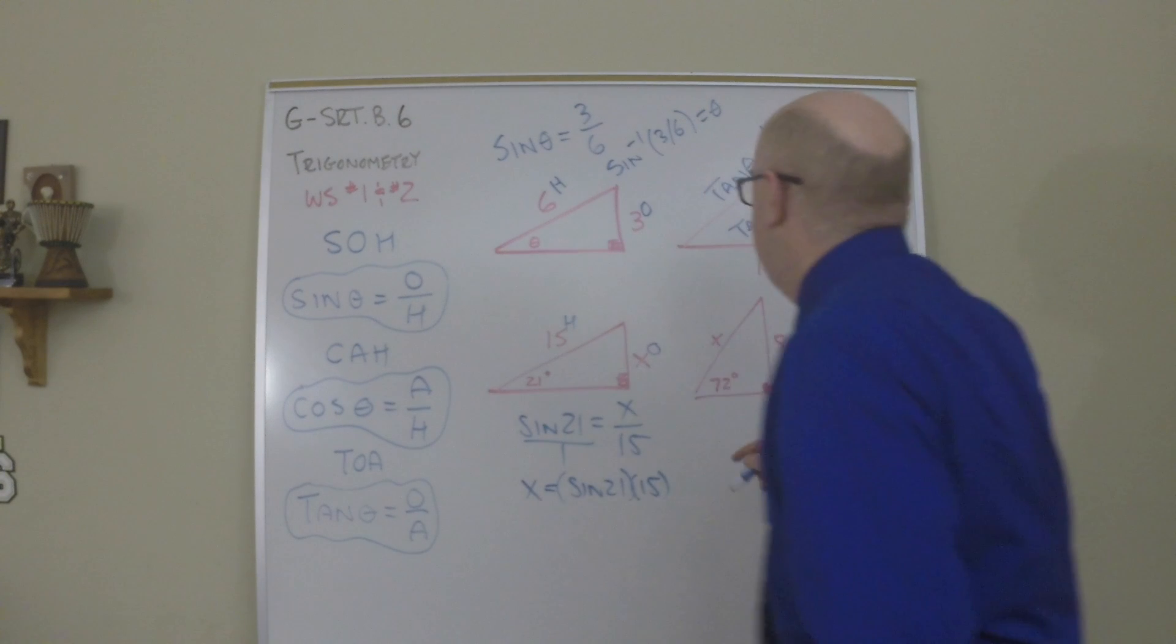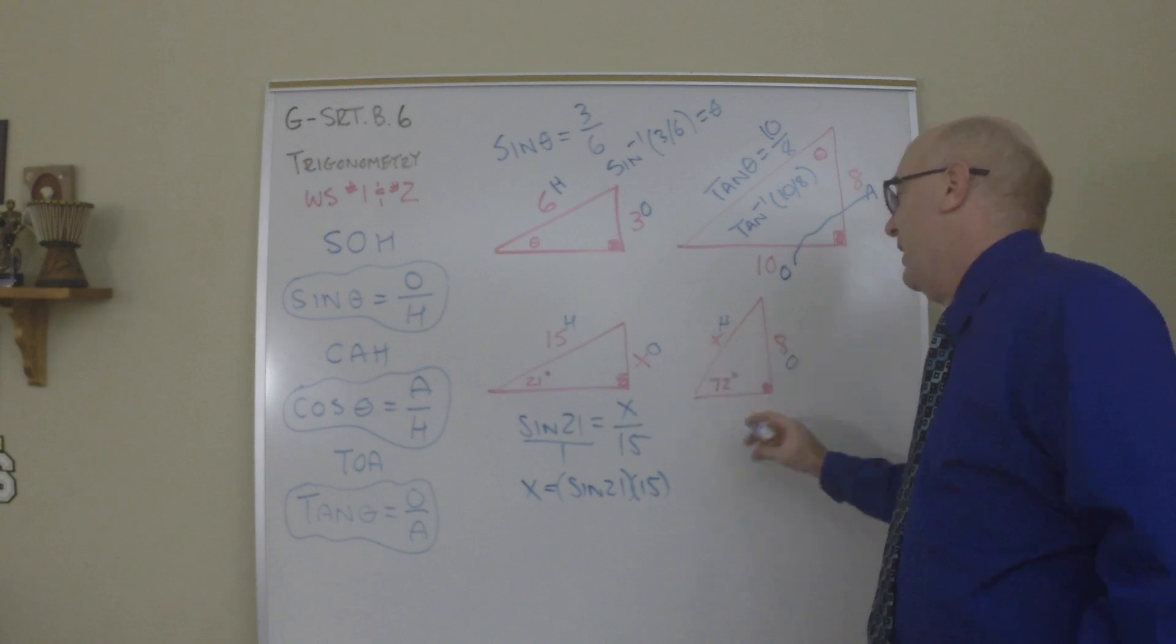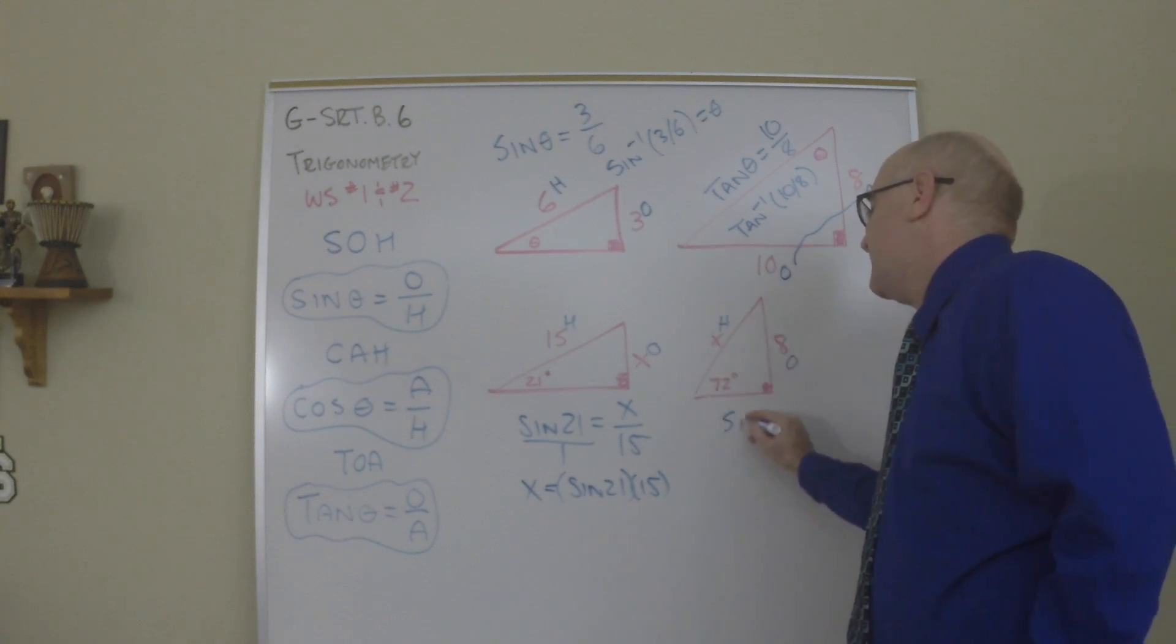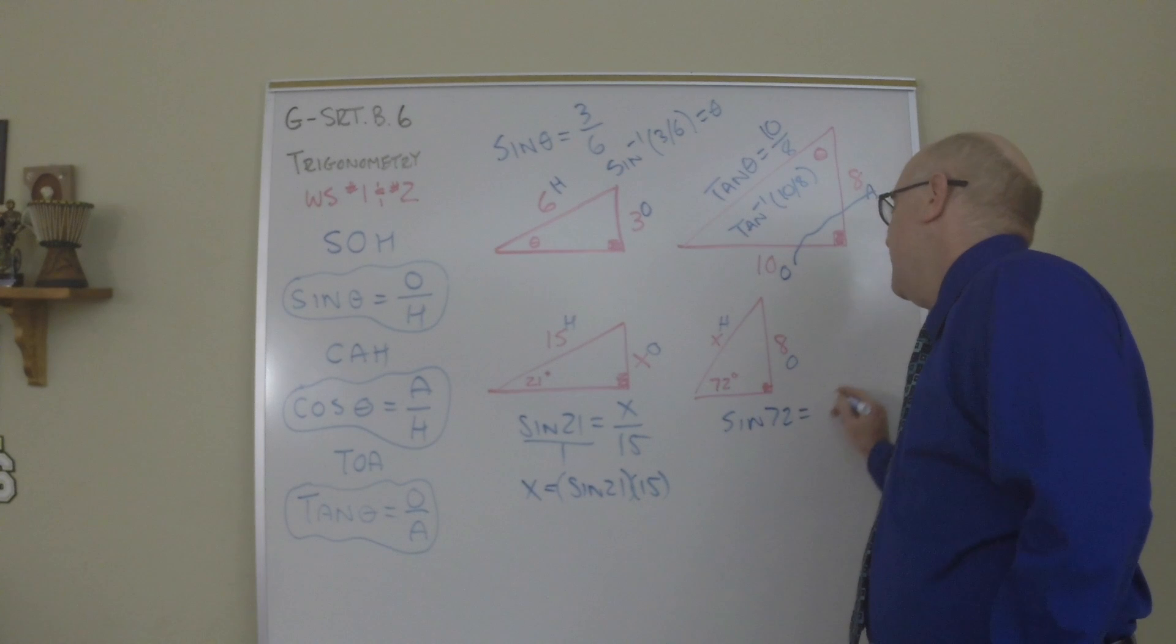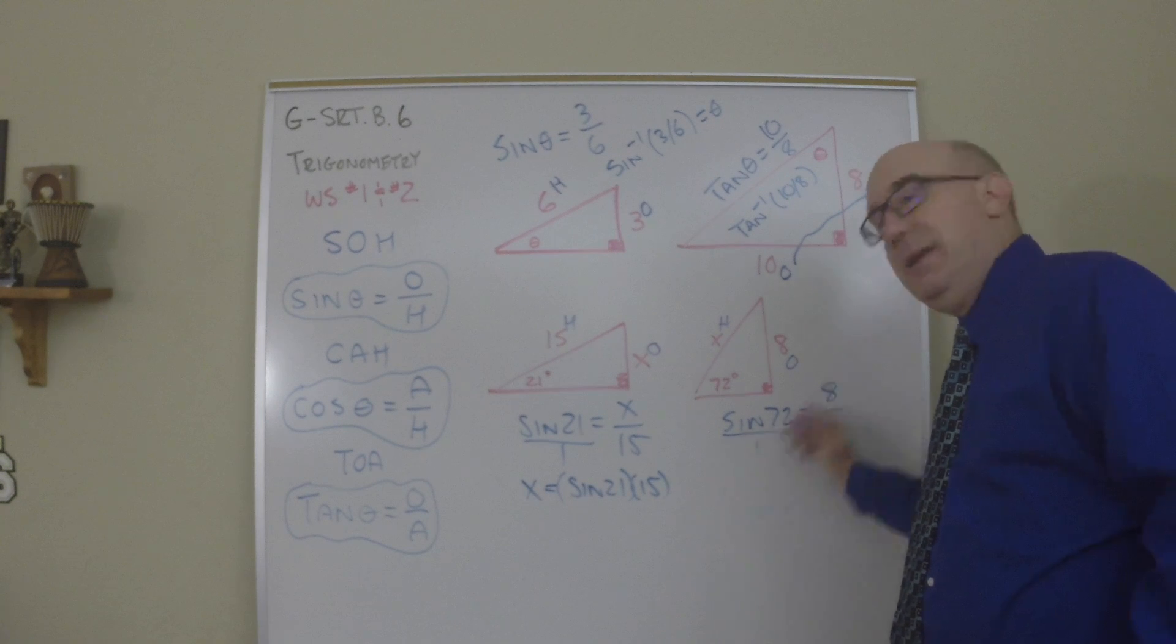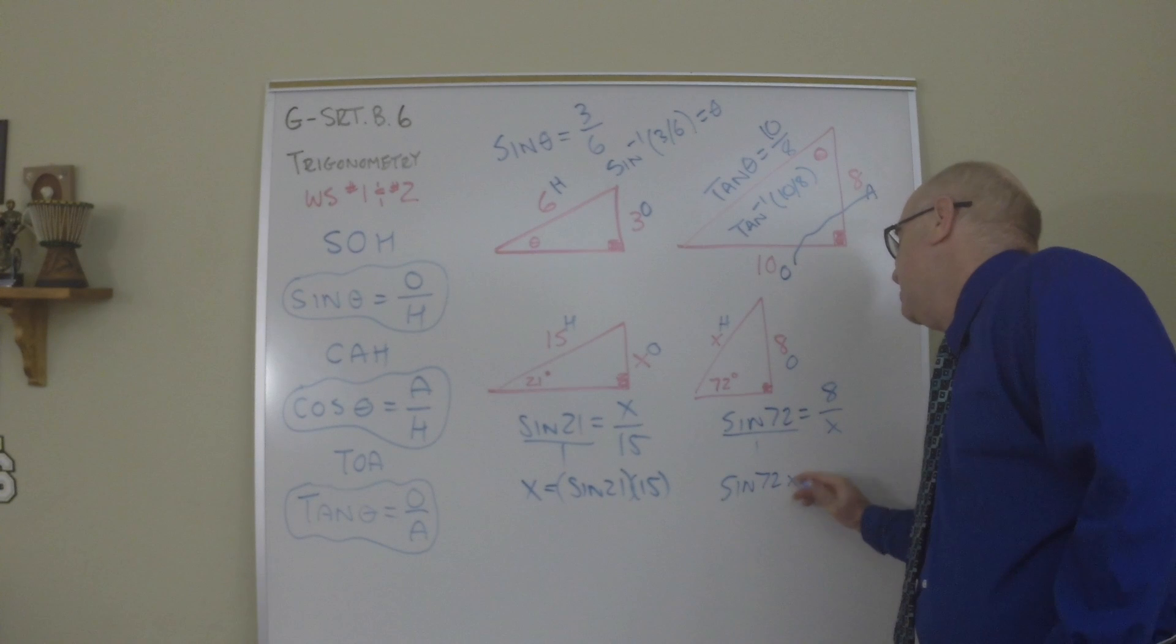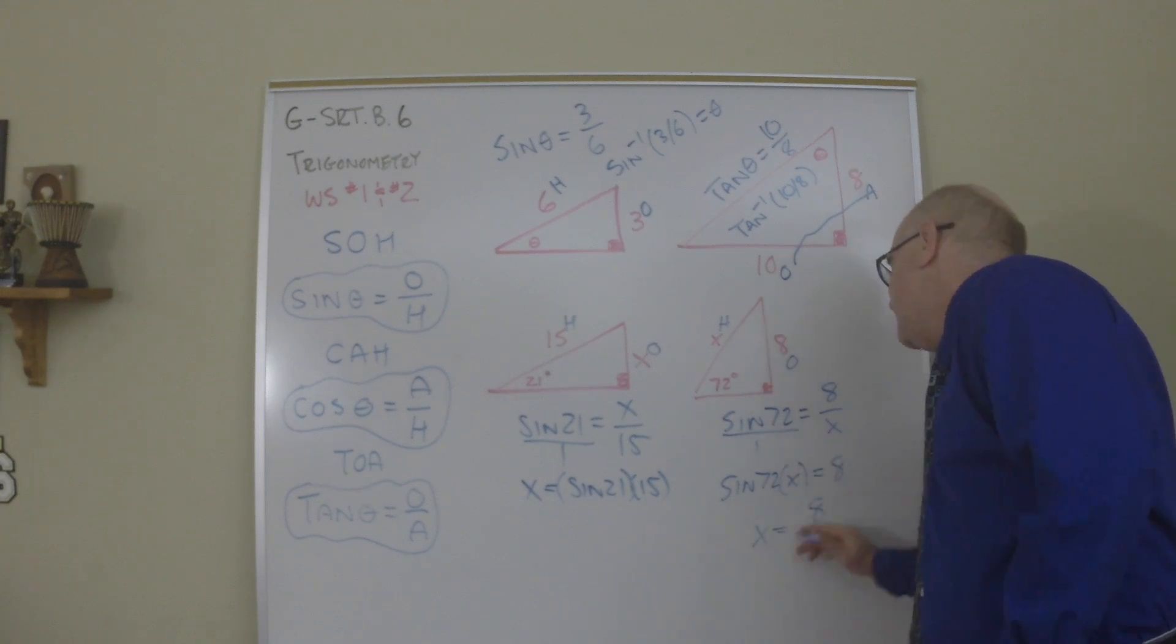Same thing over here. This is, here we go I kept doing sine unfortunately, this is opposite and hypotenuse. So again that's the sine of 72 is 8 over x. Again I always like to put this over 1 as a way to keep my cross multiplication easy. The sine of 72 times x equals 8 and the answer would be 8 divided by the sine of 72.